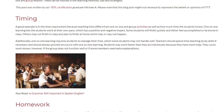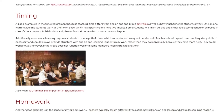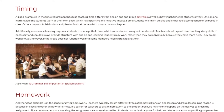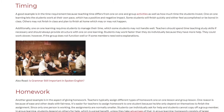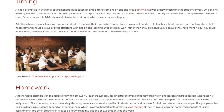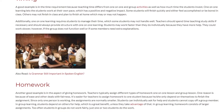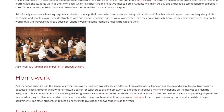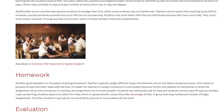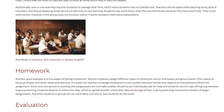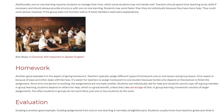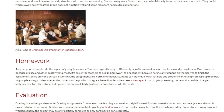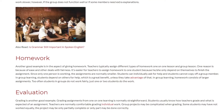Homework. Another good example is in the aspect of giving homework. Teachers typically assign different types of homework for one-on-one lessons and group lessons. It is easier for teachers to assign homework to one student because he or she only depends on themselves to finish the assignment. Since only one person is working, assignments are normally smaller, and students can individually ask for help without being able to copy off a group member.